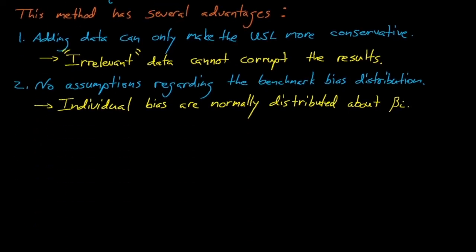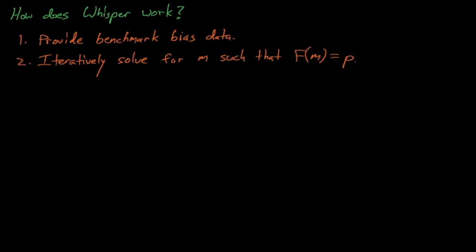So again, Whisper works by having us provide the benchmark bias values as a training set for Whisper, and then it iteratively solves for a calculational margin such that F(m) produces our desired probability, p, for our upper subcritical limit. From here, the overall calculational margin equals m plus delta k margin plus delta k AOA plus another term, delta m.